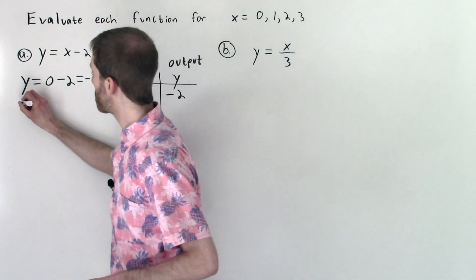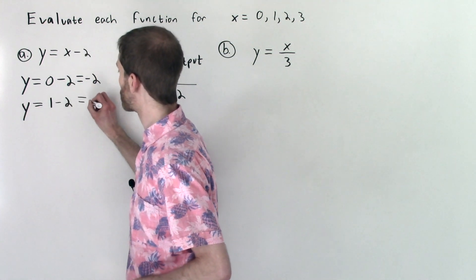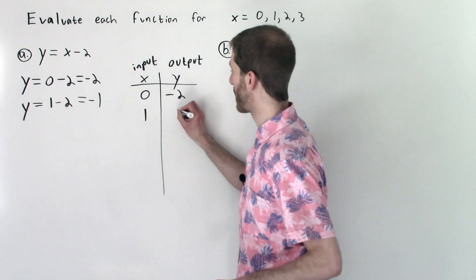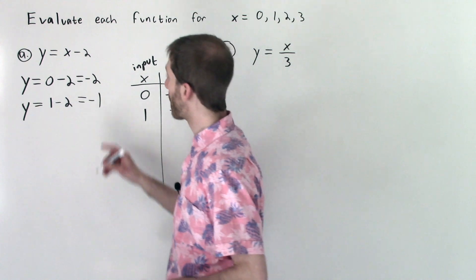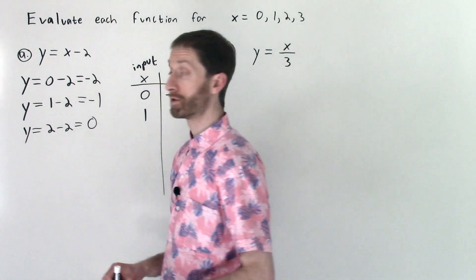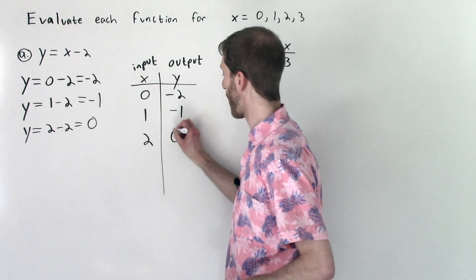Then I'm going to input 1, because that's what we're told to input. So 1 minus 2 is equal to negative 1. So I input 1, and I got out negative 1. We'll keep going. I'm going to input in 2. y equals 2 minus 2, which is equal to 0. Again, replacing x for our inputs. Input is 2, output is 0.